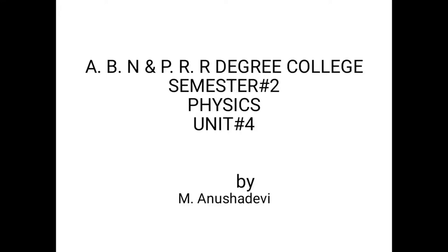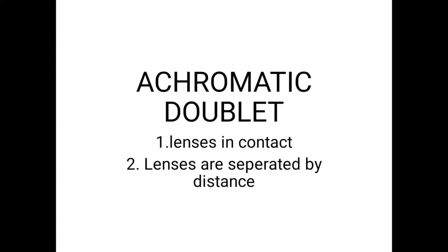Welcome to ABN and PRR online classes. Semester 2, Subject Physics, for MPC and MPCS students. Today I am discussing about Achromatic Doublet. Unit 4 is Achromatism. Achromatism is the minimization of chromatic aberration — it is the technique of minimization of chromatic aberration.